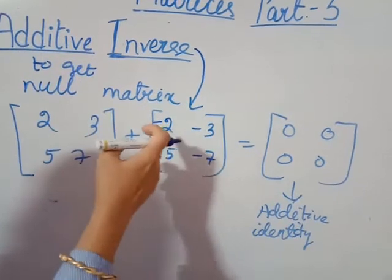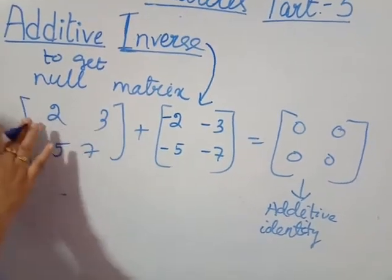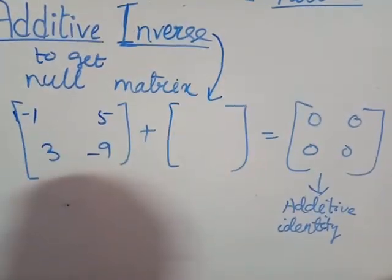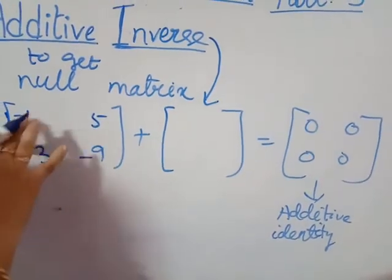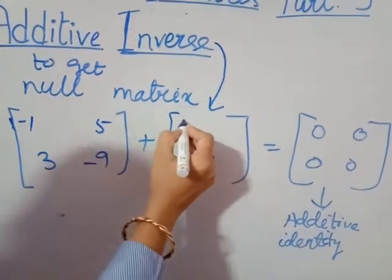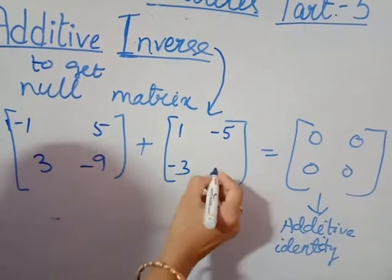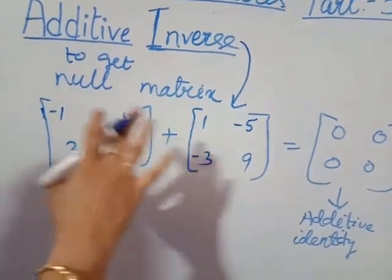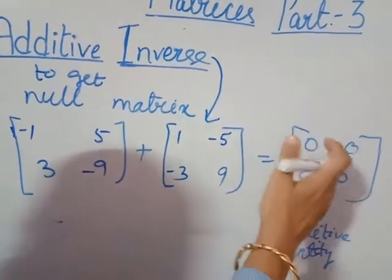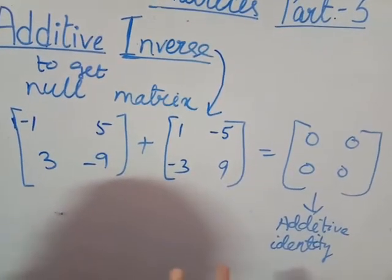Whatever the sign of each element of the matrix, you have to change the sign. Let's take another example: the matrix is minus 5, 5, minus 1, 3, minus 9. So the additive inverse will be: minus 1 becomes plus 1, 5 becomes minus 5, 3 becomes minus 3, minus 9 becomes 9. You only have to change the sign — that is called the additive inverse. Remember: additive identity is the null matrix — 0, 0, 0, 0 for a 2×2 matrix. And the additive inverse is the change of sign only.